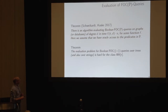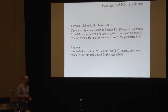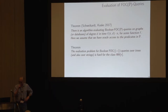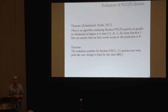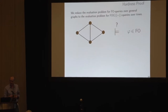What we observed after a while is that the evaluation problem for these counting queries, even if we only have the equality predicate, is already hard over trees. I think this result is very simple to prove — I'm going to show you the proof on the next slide. But it's good to know, in particular in view of the results for bounded degree graphs.